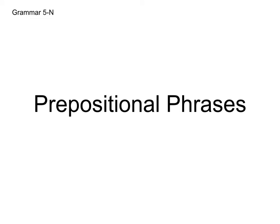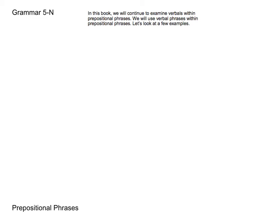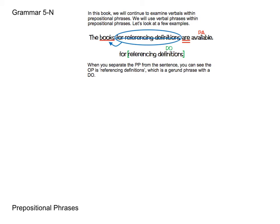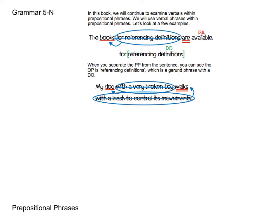Now we can get into prepositional phrases with verbals. We first looked at this in the last booklet, 5M, so we're expanding upon it here. We have: The books for referencing definitions are available. What we're going to ask you to do is pull out that prepositional phrase and analyze what's going on within it. We have "for referencing definitions" — and we can see there's a gerund phrase in there. Referencing is our verbal, and the action is being transferred to definitions, making definitions the direct object of the verbal. That entire gerund phrase works as the object of the preposition, even though within it we have the direct object definitions.